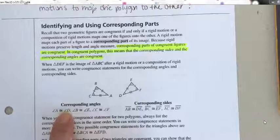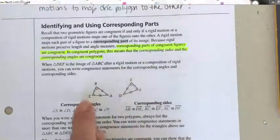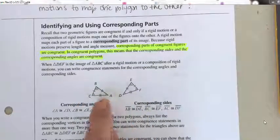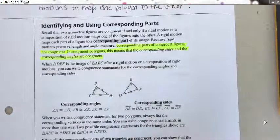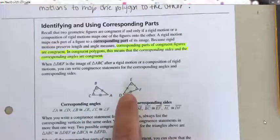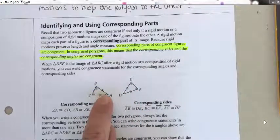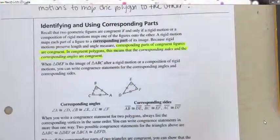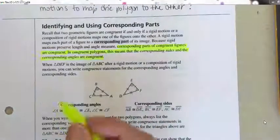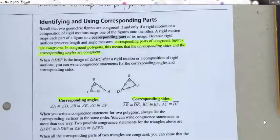Angle A is congruent to angle D, angle B is congruent to angle E, angle C is congruent to angle F. Every single pair of corresponding angles is going to be congruent — B to E, C to F, A to D — and I know that because of the arcs. The same applies to corresponding sides: segment AB is congruent to segment DE, which I know because they both have two tick marks. So all corresponding angles and all corresponding sides are congruent.